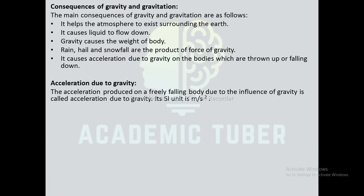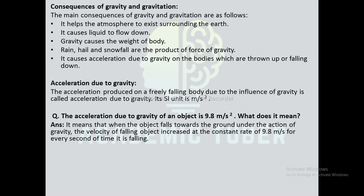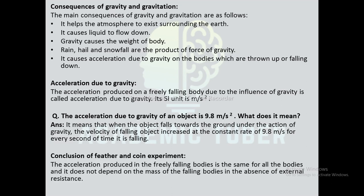Acceleration due to gravity: the acceleration produced on a freely falling body due to the influence of gravity is called acceleration due to gravity, and its SI unit is m/s². The average value of acceleration due to gravity is 9.8 m/s², meaning the velocity of a falling object increases at a constant rate of 9.8 m/s for every second it falls. The feather and coin experiment concludes that acceleration due to gravity is the same for all bodies and does not depend on the mass of a falling body in the absence of external resistance.